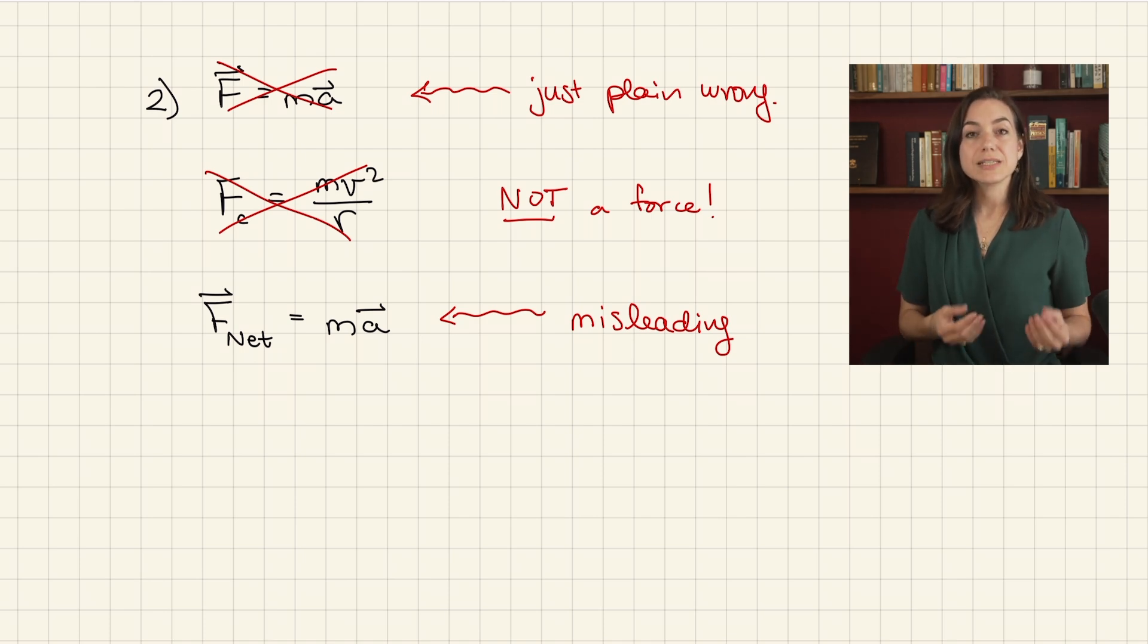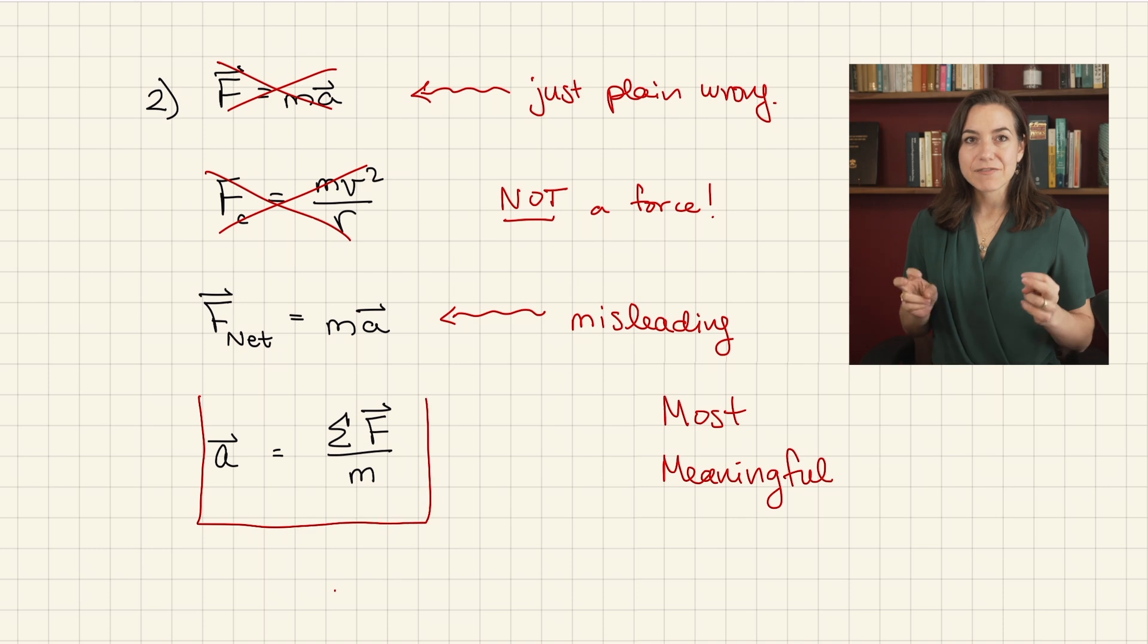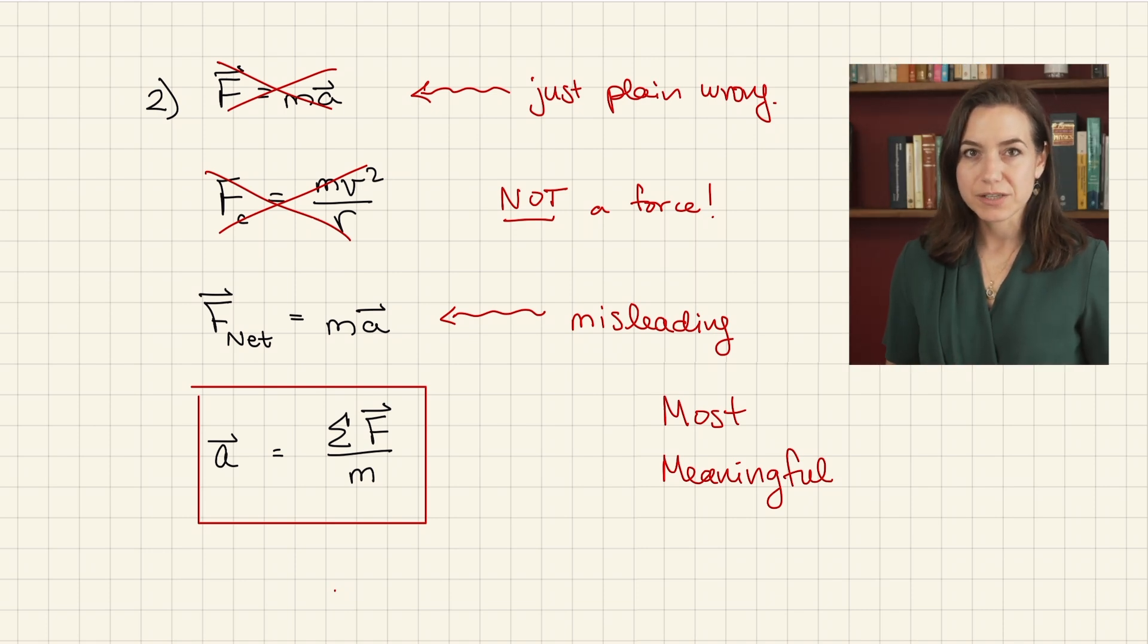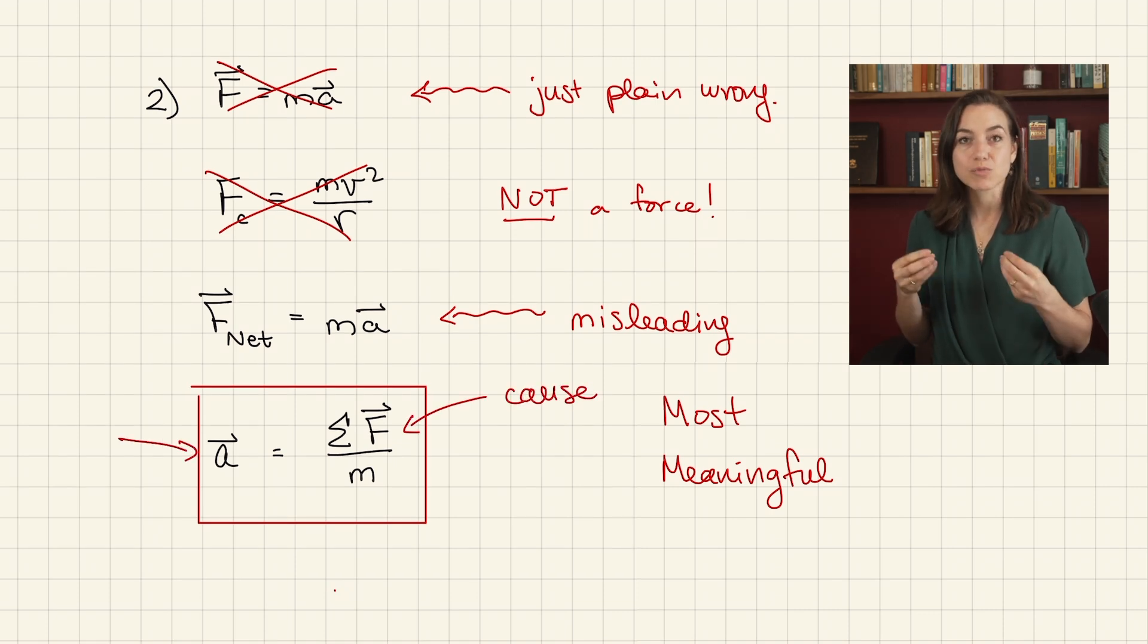So the acceleration is the dependent variable and should go on the left. So the most meaningful way to write Newton's second law, which also provides a roadmap for how to use it, is the acceleration of an object equals the sum of all forces exerted on the object over the mass of the object. I've replaced F net with sum of all forces because that makes it more clear what F net actually is and how to calculate it. Every term in your sum better be a real force exerted on your object by another object. Writing it this way makes it clear that all the pushes and pulls exerted on your object cause the object's resulting acceleration, which also depends inversely on the mass.